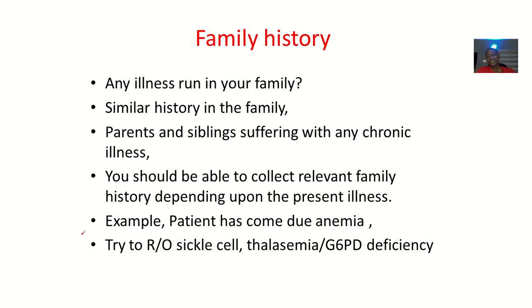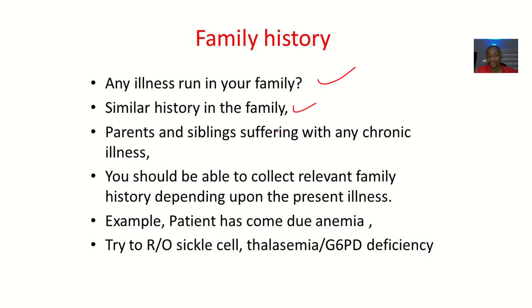In family history, you are trying to look at things like does any illness run in the family. We'll tell you why you actually need to know this information. You are trying to ask the patients whether this thing that has happened to them has actually happened to anybody in their family. Then you also ask for general chronic illness, like maybe asthma, hypertension, and many other chronic illnesses.